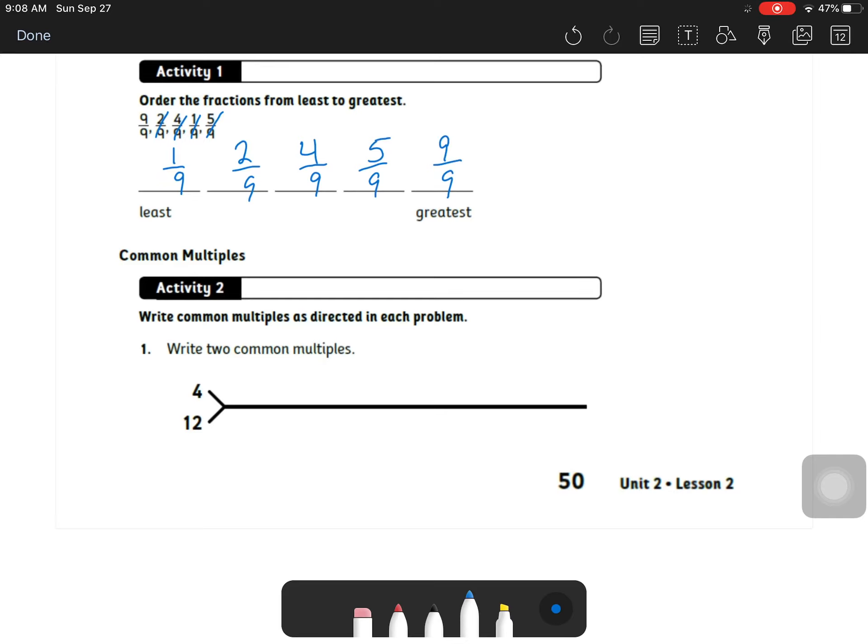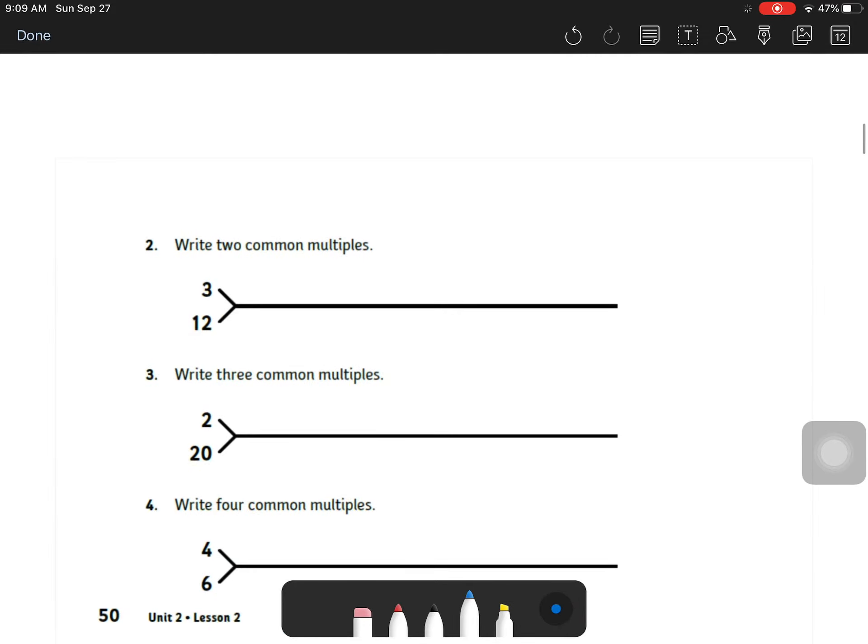Two common multiples. So on these ones, because 12 is a multiple of 4, then that means we can just write 12 and then count by 12s. So we could do 12 and then add another 12, that would be 24. Same thing here. Again, 12 is a multiple of 3, and so we can count by 12s again, 12 and 24. Same thing here, since 20 is a multiple of 2, we can count by 20s, 20, 40.